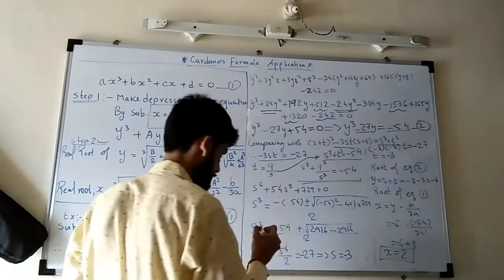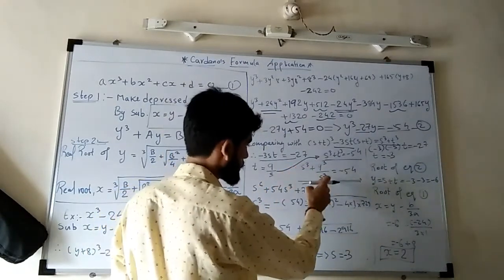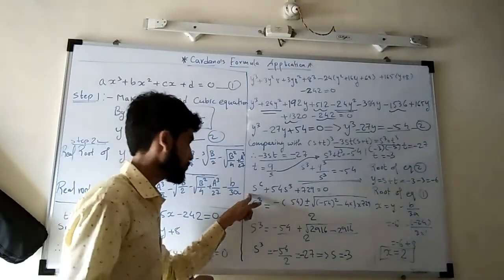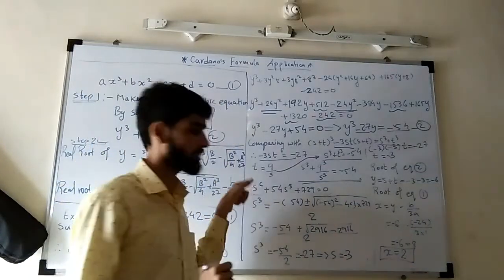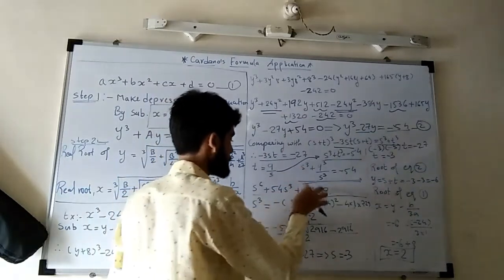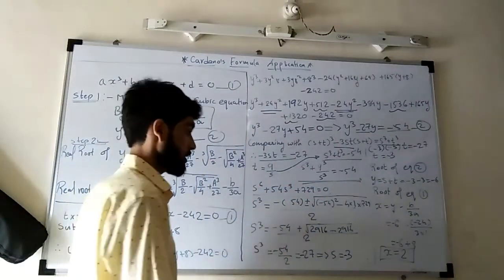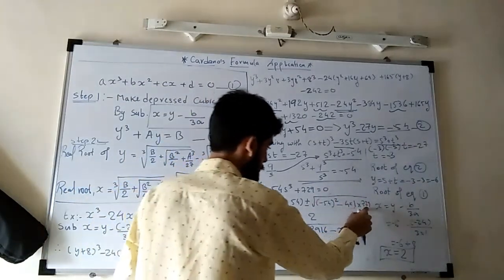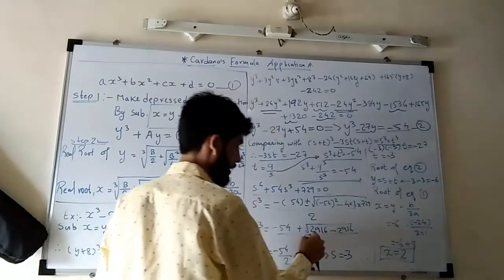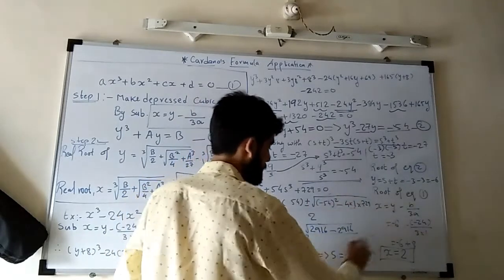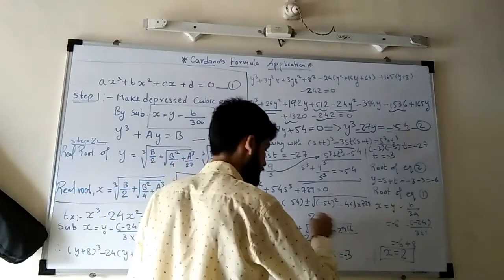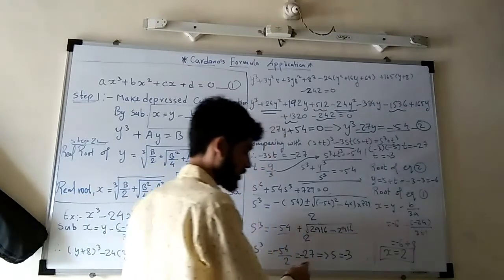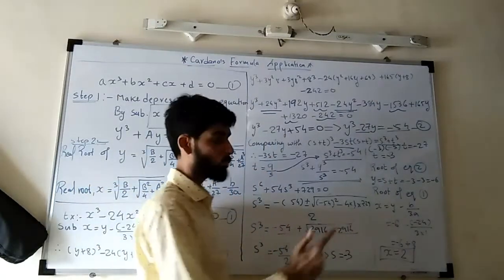After simplification, taking LCM we get s⁶ plus 54s³ plus 729 equals 0, which is a quadratic equation in s³. We solve it using the quadratic formula: minus b plus or minus square root of b² minus 4ac, divided by 2, where b is 54, a is 1, and c is 729. Substituting: b² minus 4ac gives 2916 minus 2916 equals 0, so the square root term cancels out. Therefore s³ equals minus 54 divided by 2 equals minus 27. If s³ equals minus 27, then s equals minus 3. I selected this example specifically so that the cube root terms cancel and simplification is straightforward.